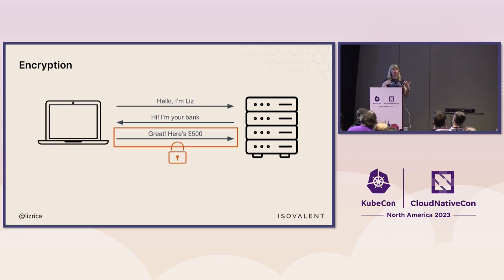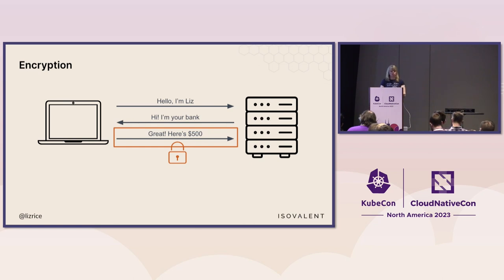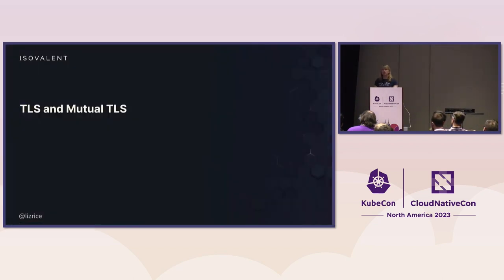You want to know that you're talking to the bank because you don't want to be paying your money to some random person. So establishing identity at both ends of a connection is critical. It's also important to encrypt the traffic flowing between those endpoints, because you don't want everyone knowing how much money you've got in your bank account, or monitoring that traffic to get your password. In a web browser talking to a bank, we're probably talking about TLS — you're all familiar with the little padlock icon in the browser when TLS has been established.